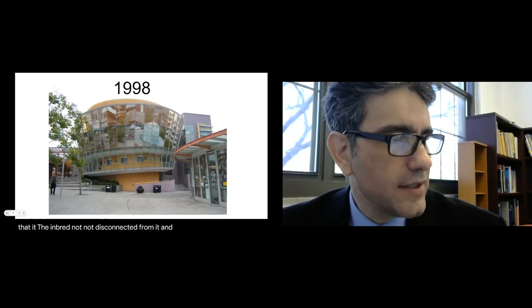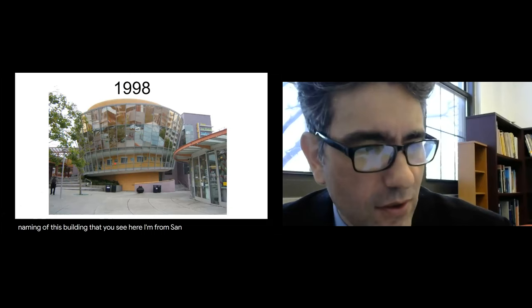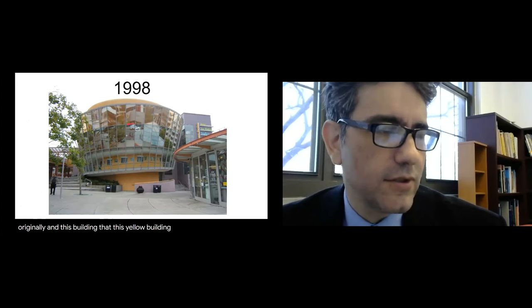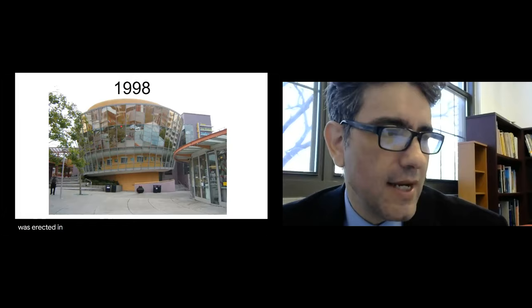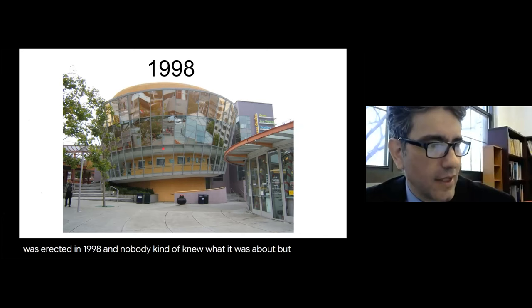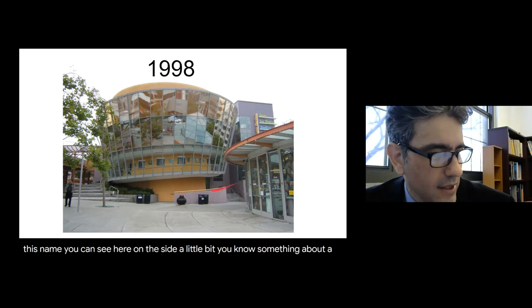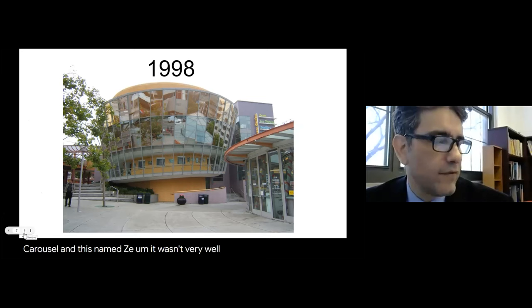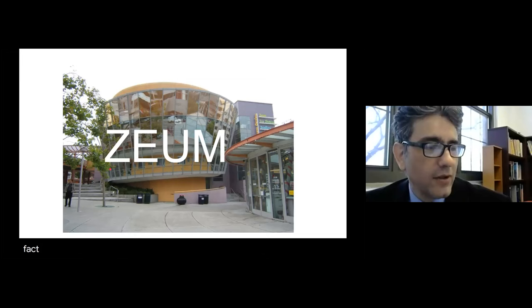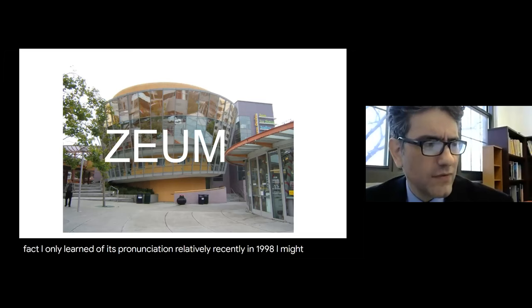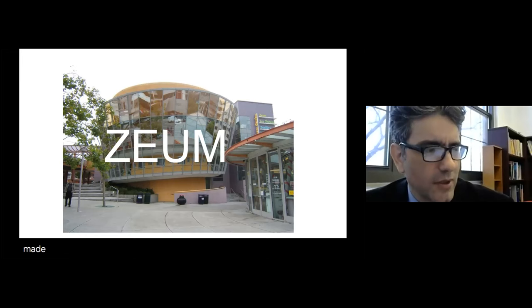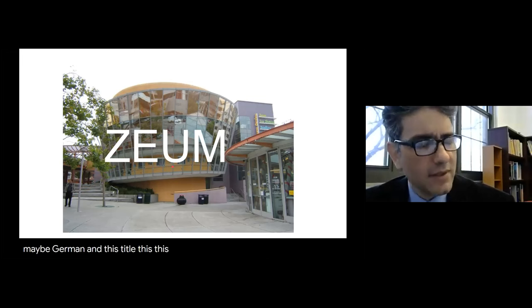I like to tell the anecdote of the naming of a building in San Francisco. This yellow building was erected in 1998. Nobody knew quite what it was about, but it had this name 'ZEUM' — Z-E-U-M. It wasn't very well advertised. I wasn't even sure how to pronounce this name — I kept saying 'Zoim' as if it were German.